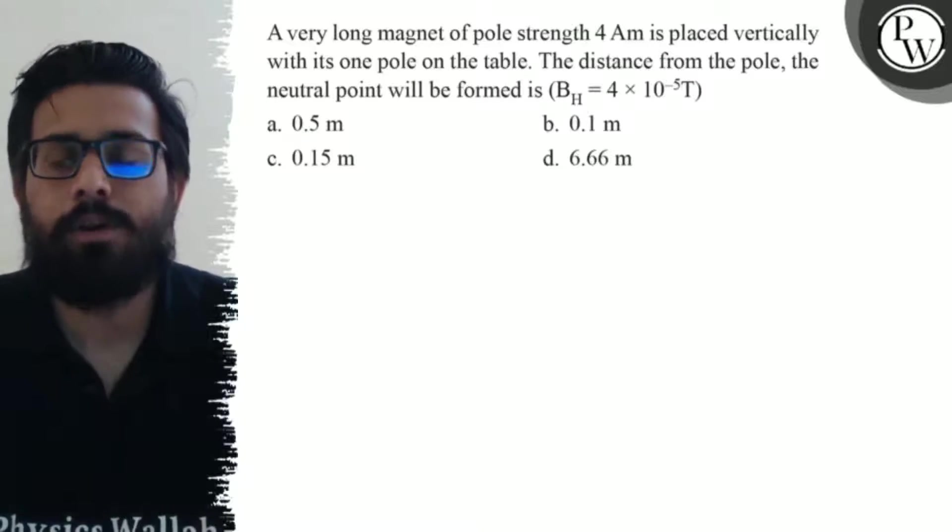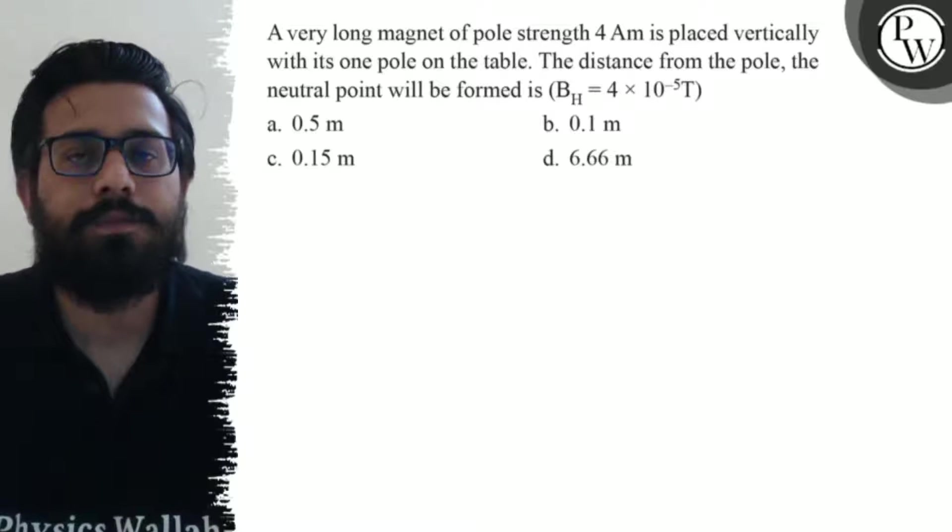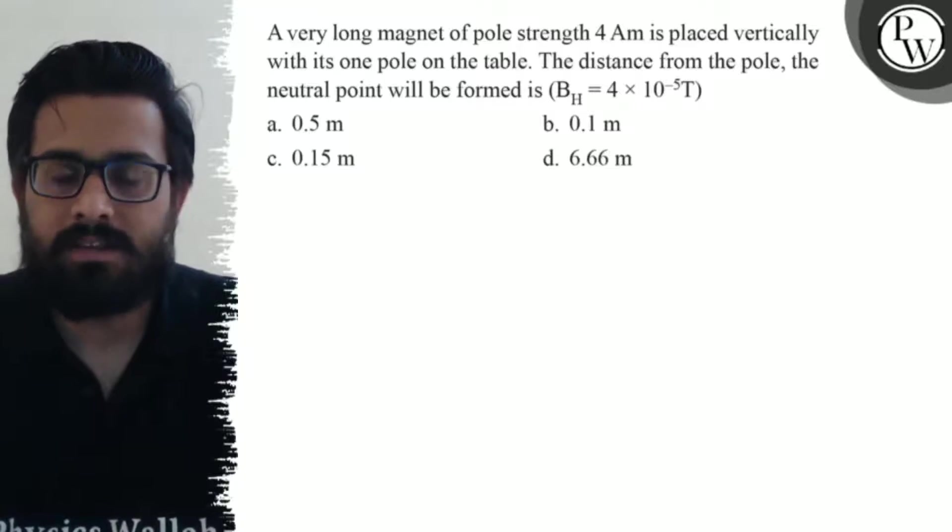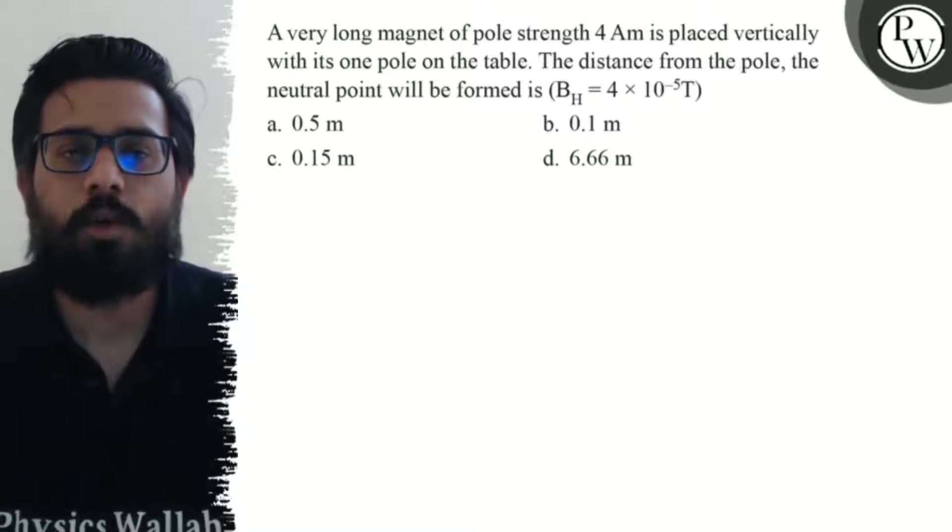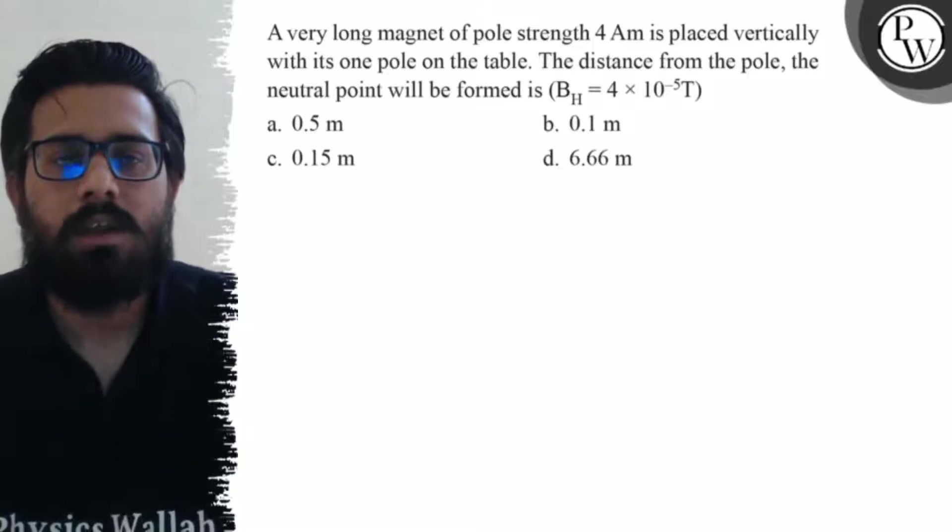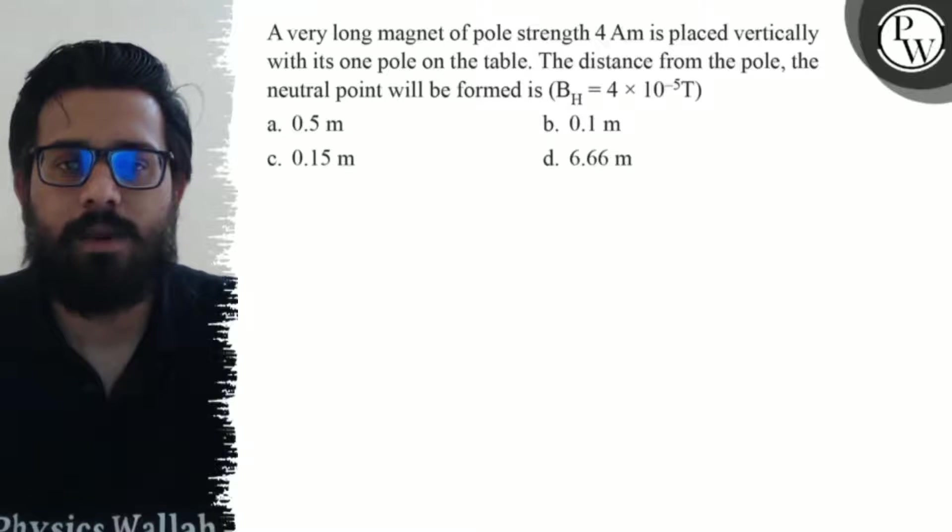The horizontal component of Earth's magnetic field is 4 × 10^-5 Tesla. The options are: (a) 0.5 m, (b) 0.1 m, (c) 0.15 m, (d) 6.66 m. What are the given data we have?